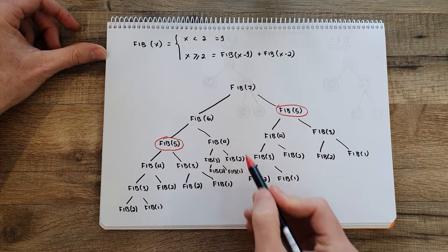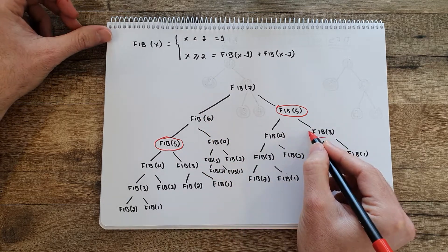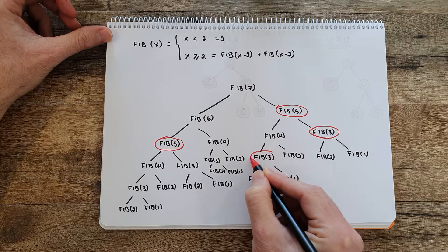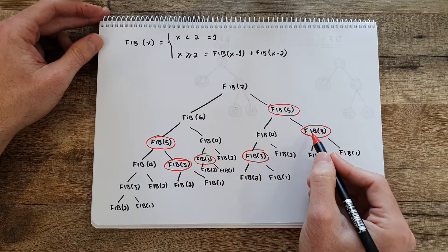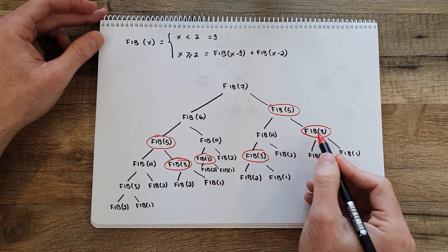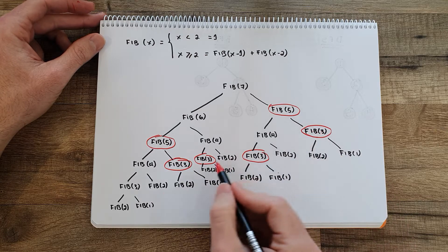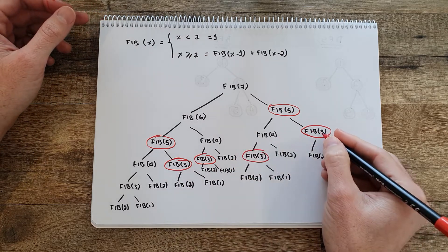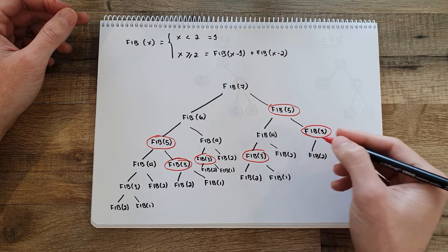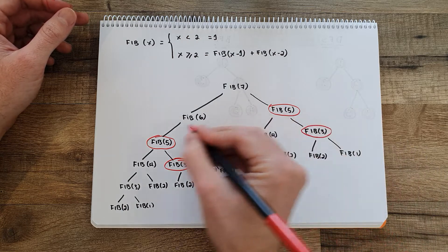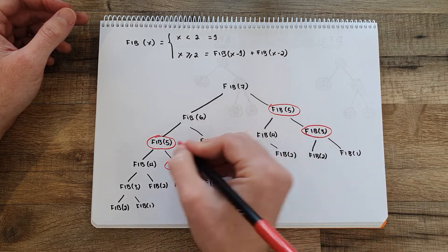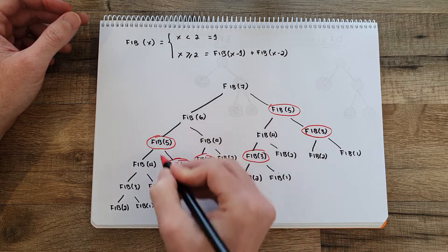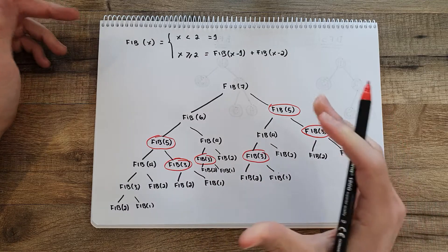Going deeper into the tree, we also see more duplication — like Fibonacci of 3, for example, being calculated multiple times. Once Fibonacci of 3 is calculated, all the other occurrences of Fibonacci of 3 are the same. So calculating it once would already be the optimal solution. We can see that each of the subproblems overlaps with each other — Fibonacci of 5, Fibonacci of 3, Fibonacci of 4, and so on.